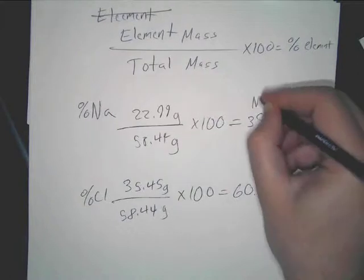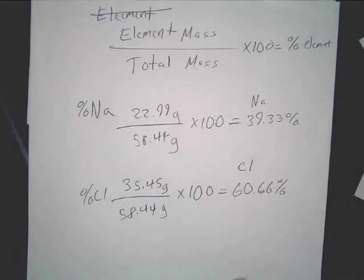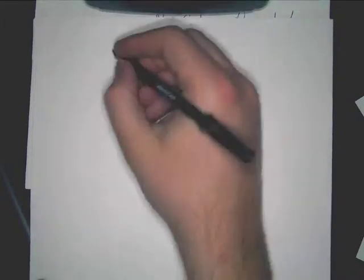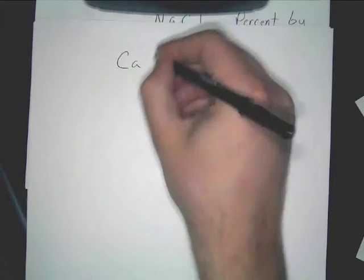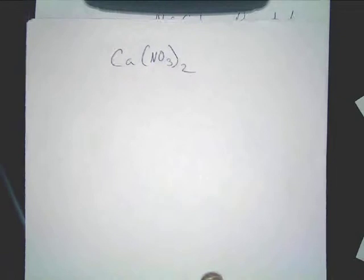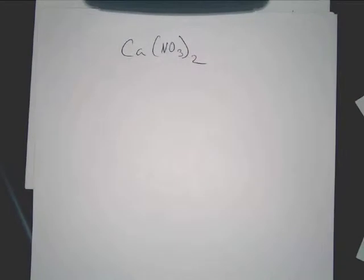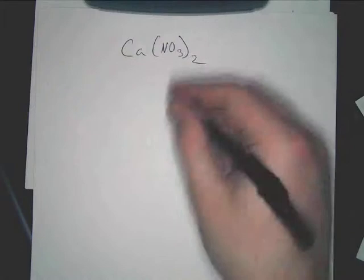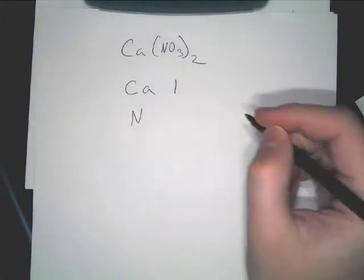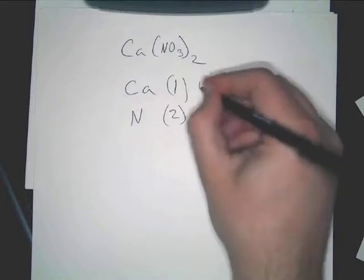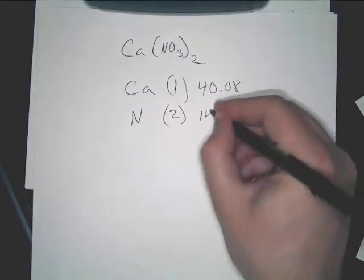Now the only other type of problem that could give you any trouble would be one with three elements. Let's say we have calcium nitrate, and I want to find the percent composition of that. You've got three elements, so you've got to find the mass of all three. You've got one calcium, two nitrogens, and six oxygens. Calcium is 40.08, nitrogen is 14.01.